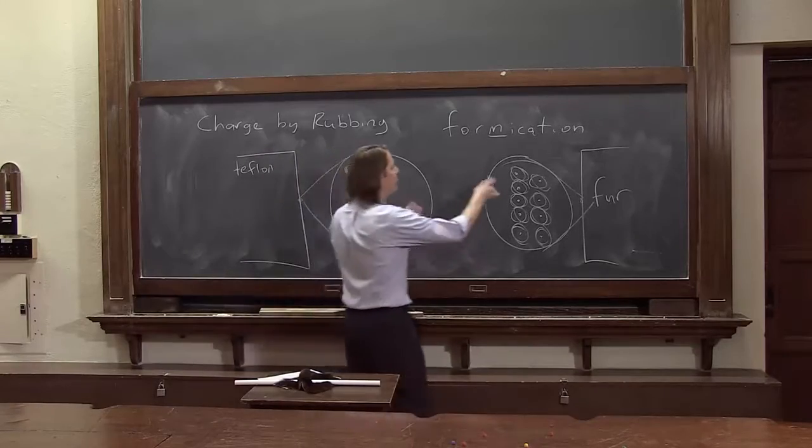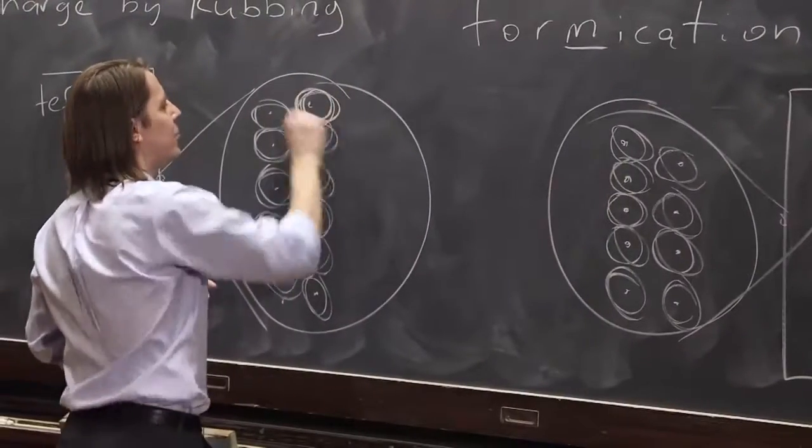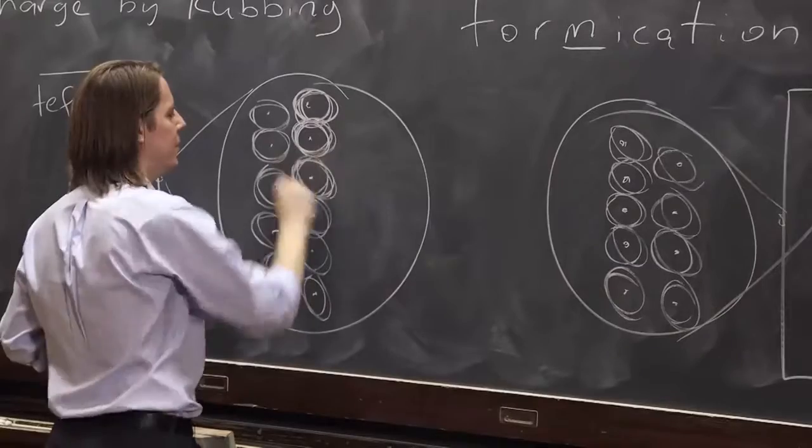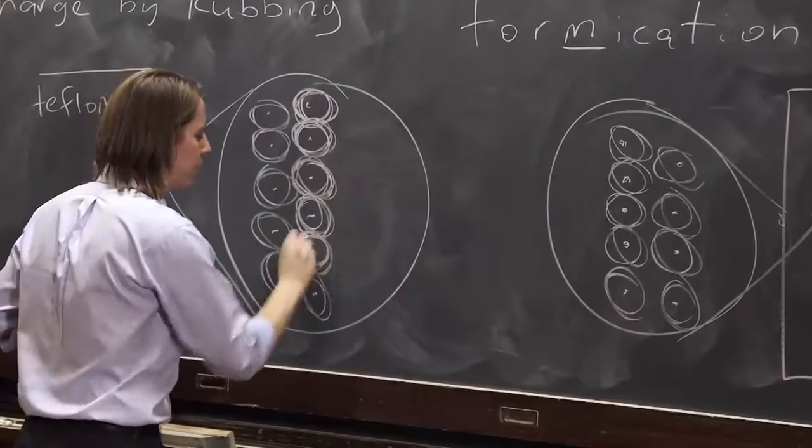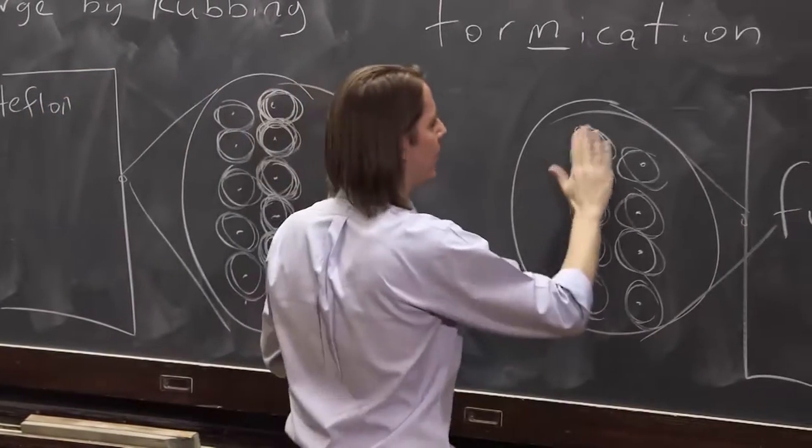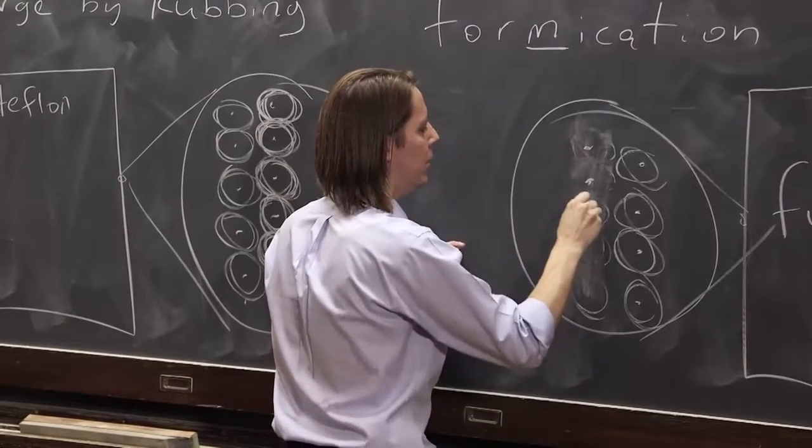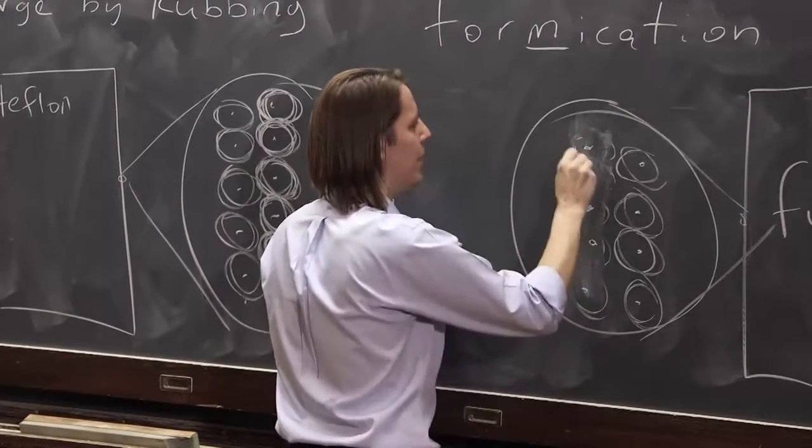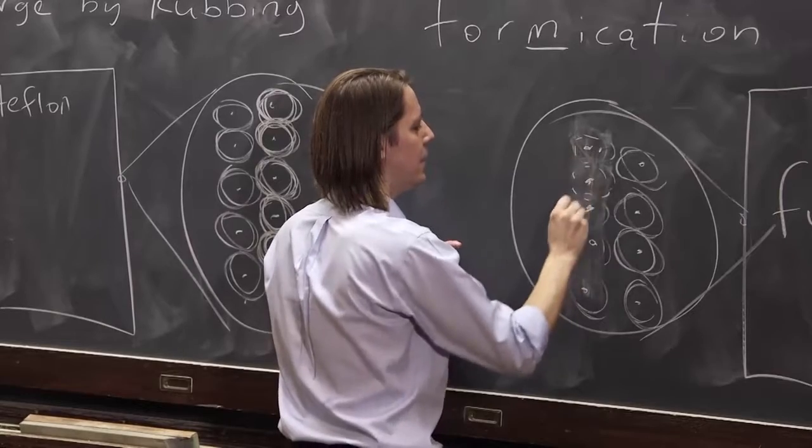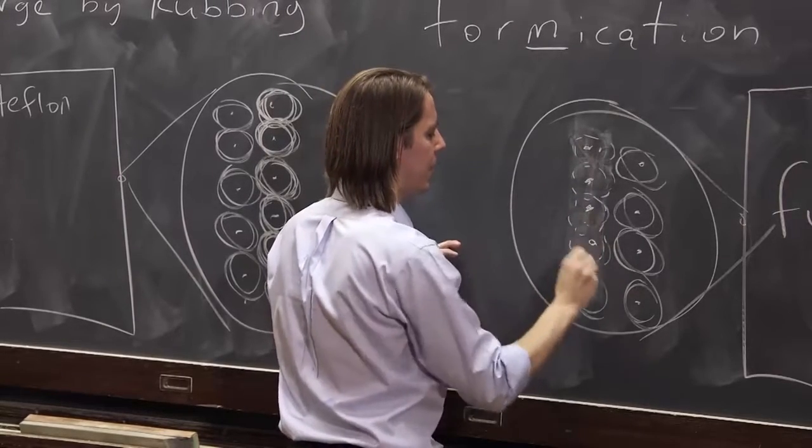So electrons get loose, and what happens is you end up with more electrons tend to go to the Teflon, and more electrons tend to leave the fur. What I can do is redraw this. The nuclei are still there, but now it's deficient in electrons like that.